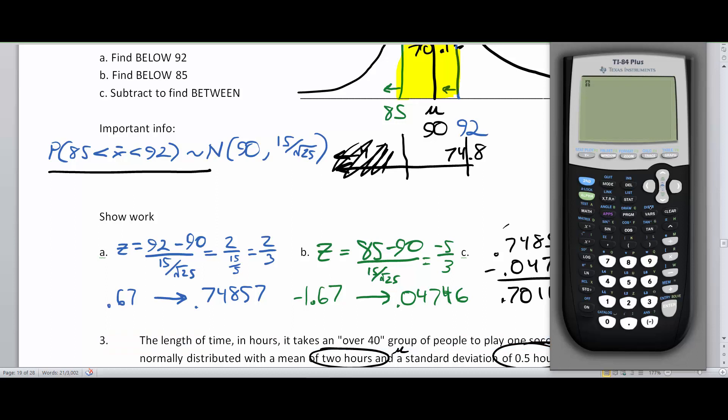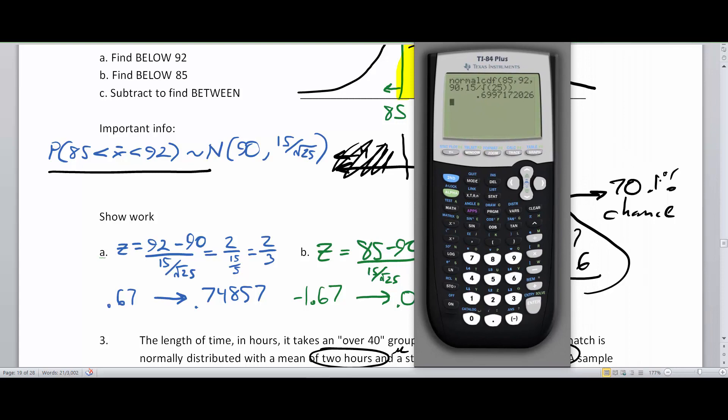If I hit the second button, which turns into an arrow, and I hit the vars button, which is the variable button, and you click down to the normal CDF and hit enter, you'll notice that I have this all loaded in here. Here's my lower value, 85. So type in 85, enter, and then 92 enter for my upper bound. Then I have my mu of 90, and then for my standard deviation, I'm going to type in 15 divided by second x to the second power here, which gives me my little square root check mark, the radical sign. 25, close it off, and go to paste, and then I hit enter, and there it is, 0.6997, which rounds to 70%, which is really good compared to what we did by hand.